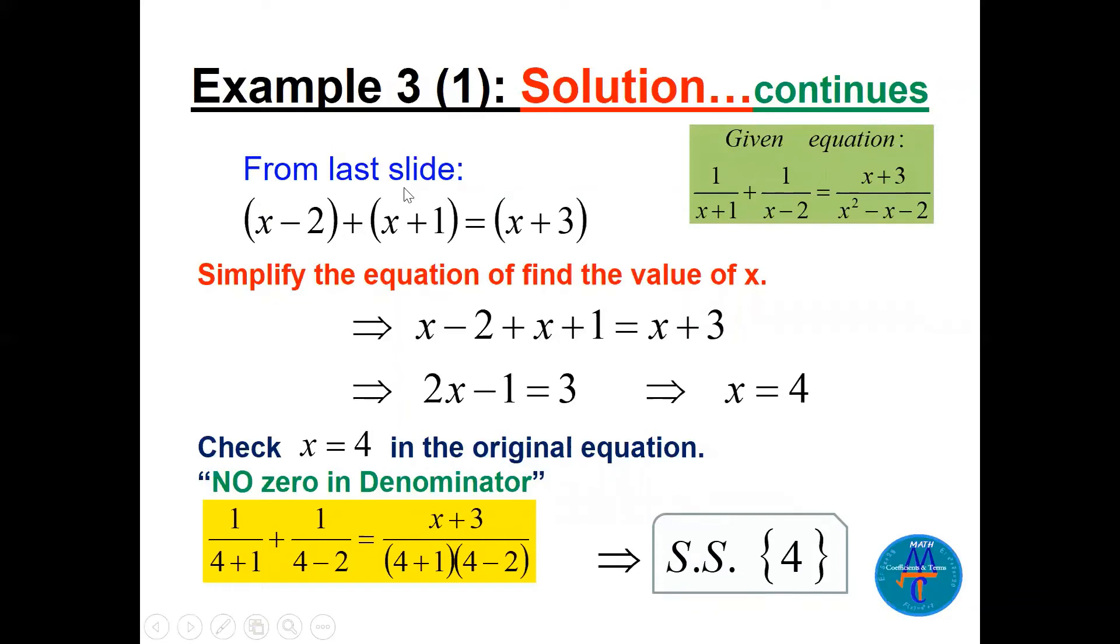Now from the last slide, we have this equation. x minus 2, x plus 1, x plus 3, 2x minus 1. Bring the x, x will be 4. Now check. You see, this is the given equation here. 4 plus 1, 4 minus 2, 4 plus 1, 4 minus 2. No zero, right? You see no zero in the denominator. So that's correct. Solution set, SS is this x equals 4.